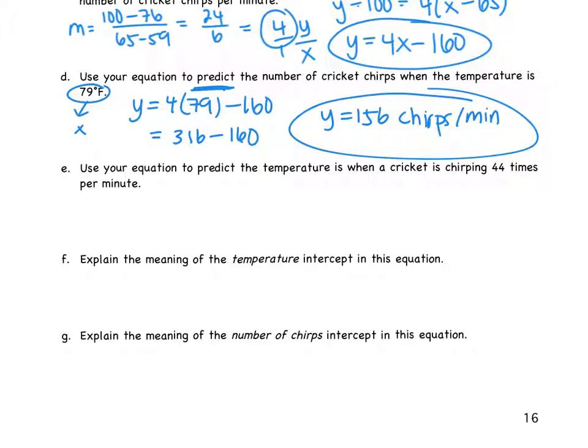Okay, use your equation to predict the temperature. So we are finding X. When a cricket is chirping 44 times a minute, that's Y. So in this case, we are given Y. We're finding X. Using your equation, this time you're plugging in for Y. If I add that 160, I get 204 equals 4X. Dividing by 4, I get X equals 51. What are the units on that? Degrees Fahrenheit.